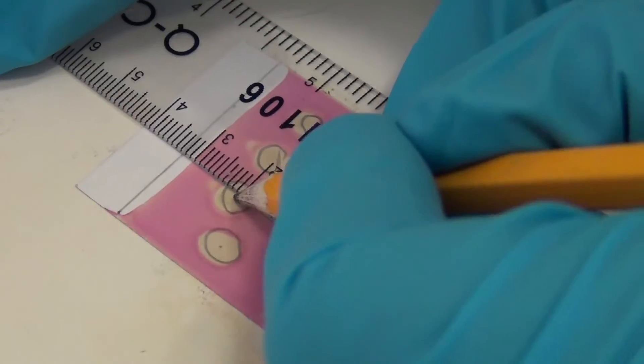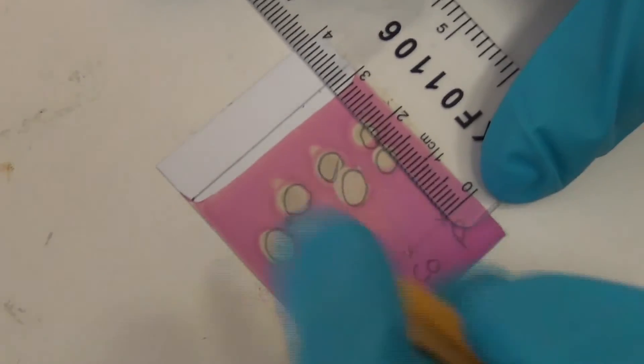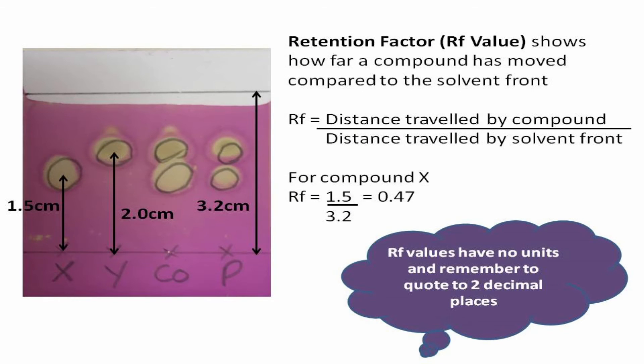For example, the distance compound X has travelled is 1.5 centimetres. You also need to repeat this measurement for every spot on the plate. RF value stands for retention factor, which shows how far a compound has moved compared to the solvent front. It is calculated by dividing the distance travelled by the compound by the distance travelled by the solvent front. For example, for compound X, the RF value is 1.5 over 3.2 and is equal to 0.47.